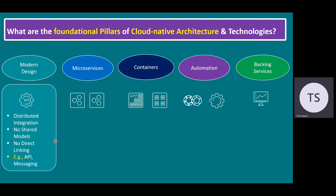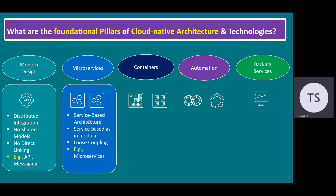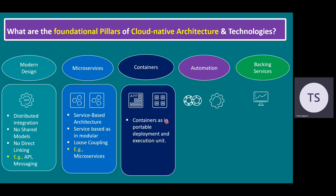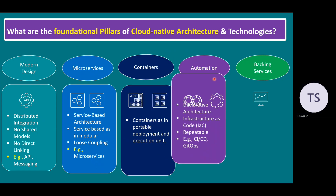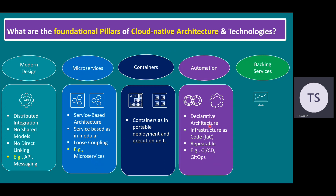When it comes to microservices, it's a service-based architecture — modular and loosely coupled. Example: microservices. Containers are portable deployment and execution units. Automation means declarative architecture, infrastructure as code, and whatever repeatable tasks can be automated. An example is CICD pipeline. In our previous session, we talked about CICD pipelines, and one example is GitOps, which is mainly used for automation purposes.